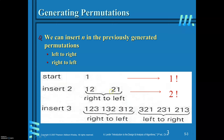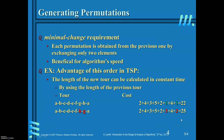Inserting 3 from left to right into permutation {2,1} gives: {3,2,1}, {2,3,1}, and {2,1,3}. This generates all six permutations. This method is called the bottom-up minimal change approach, because each permutation is obtained from the previous one by exchanging only two elements.